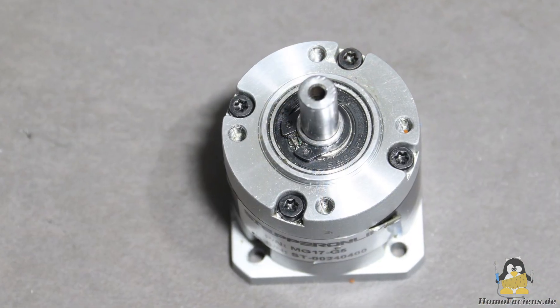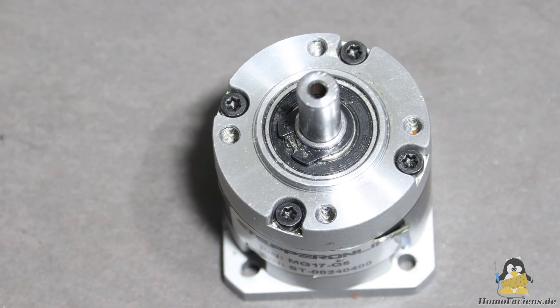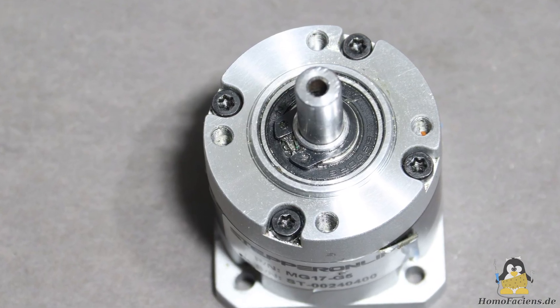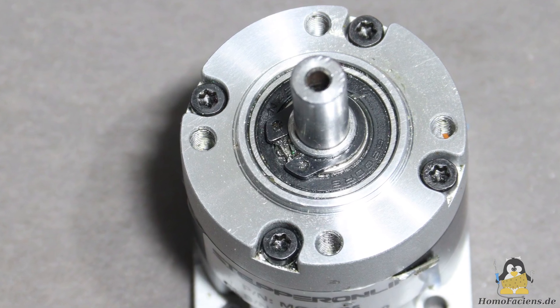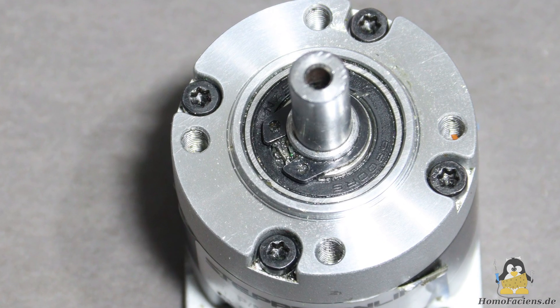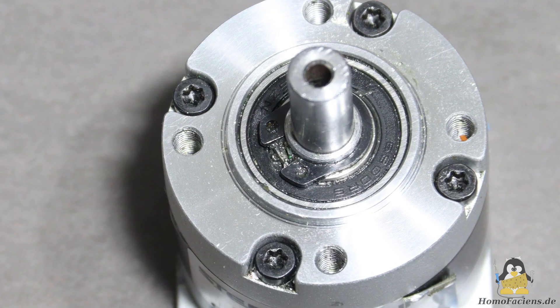A major problem is that the gearbox is subjected to a relatively high axial force, which this component is not designed for. The auger screw presses against a type 6900 ball bearing with an outer diameter of 22mm.